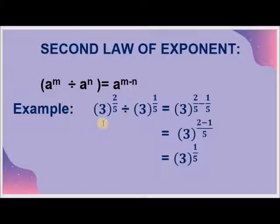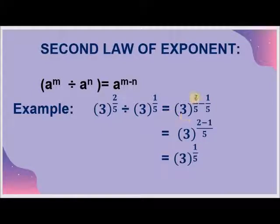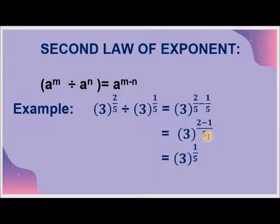For example, if you have 3 raised to the power 2 by 5 divided by 3 raised to the power 1 by 5, this becomes 3 raised to the power 2 by 5 minus 1 upon 5. On solving, we get 3 raised to the power 2 minus 1 upon 5, which equals 3 raised to the power 1 by 5.